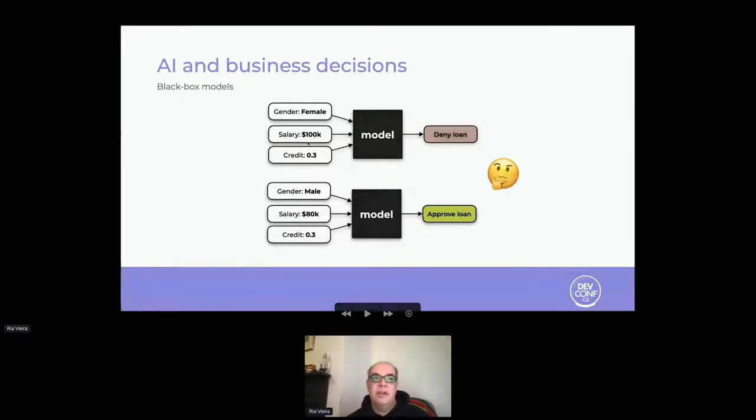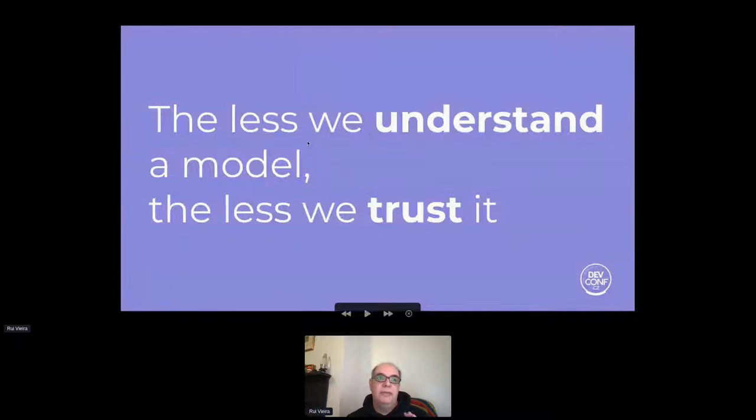Let's take an example to illustrate how important it is to understand the model and be able to explain the model's outcome. This basic model provides a recommendation of whether an applicant should get a loan approved or not. The input data would be the applicant's gender, salary, and credit score. If you look at this model, we can start suspecting that something is wrong because common sense will dictate that the higher the income, the more likely the loan will be approved. And on top of everything, gender shouldn't be a determining factor in whether a loan is approved or denied. But if we don't have access to the internals of the model, or even if we have but it's so complex that humans cannot understand it, how can we understand and interpret the result?